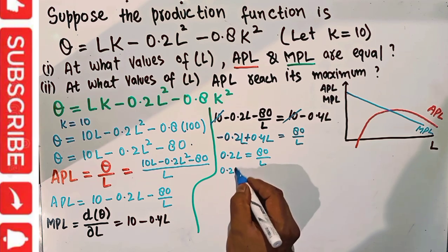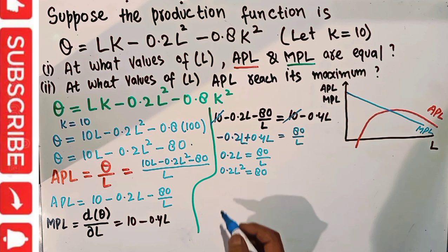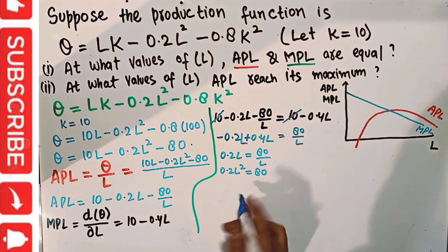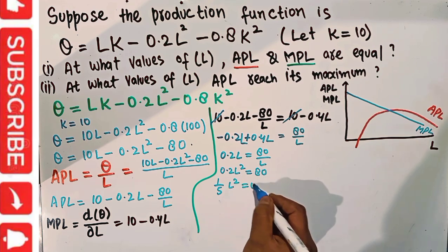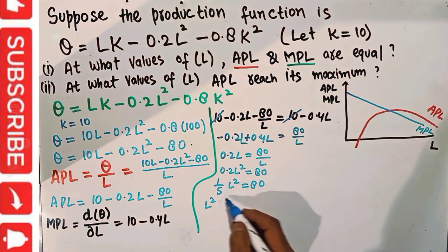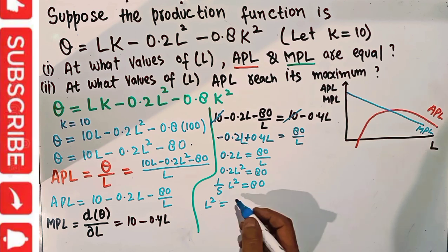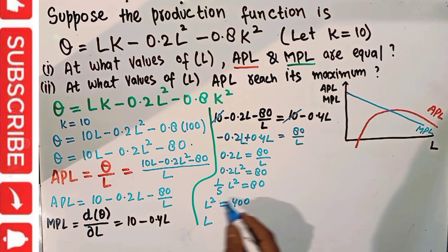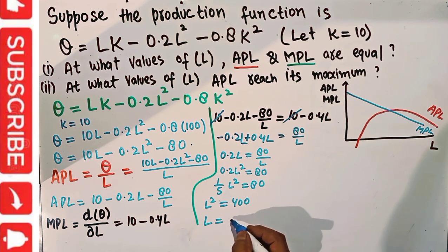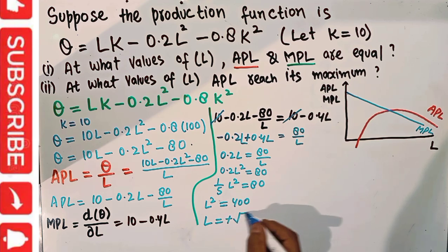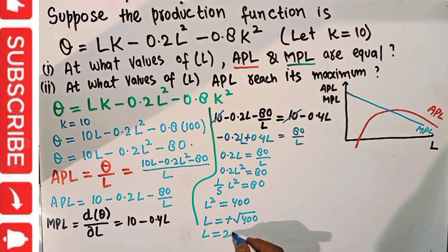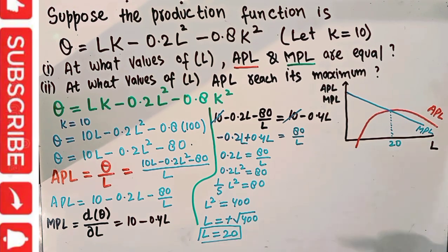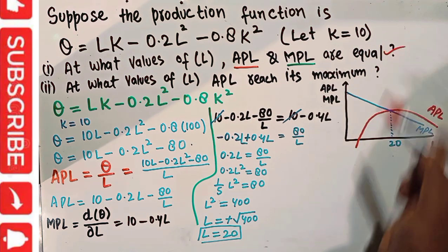This implies 0.2L² = 80. Since 0.2 = 1/5, we have L²/5 = 80, so L² = 400. Taking the positive square root, L = 20. When the units of labor equal 20, MPL equals APL. This is the answer for the first part.